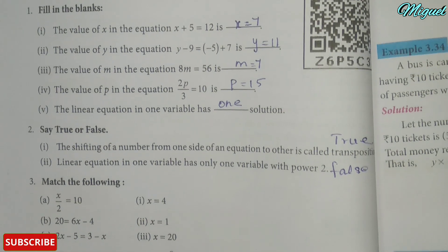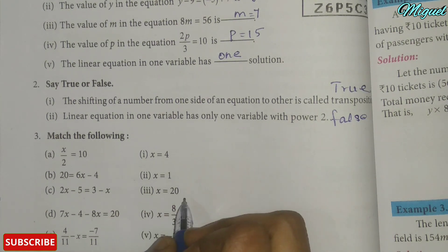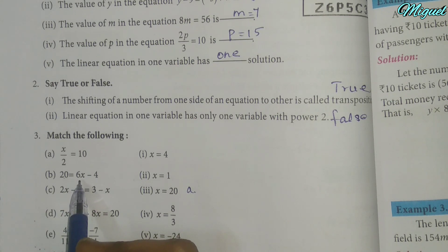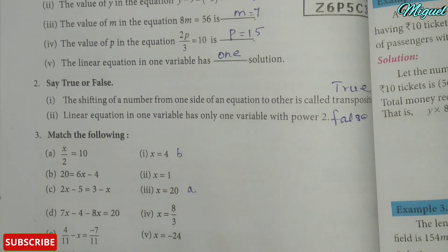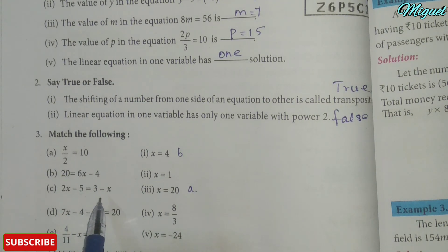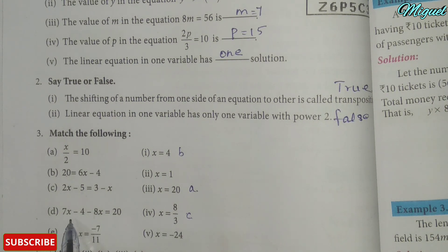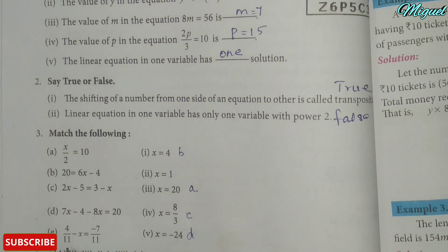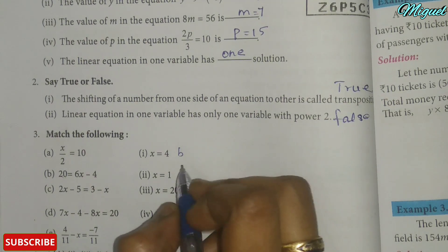Next, match the following. x by 2 equals 10, so the answer is x equal to 20. 20 equals 6x minus 4 — answer is option A. 2x minus 5 equals 3 minus x — answer is C. 7x minus 4 minus 8x equals 20 — answer is V. 4 by 11 minus x equals minus 7 by 11.